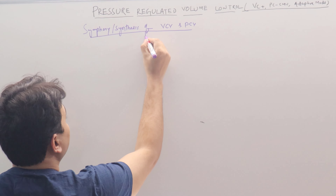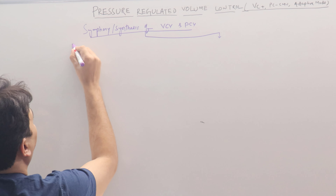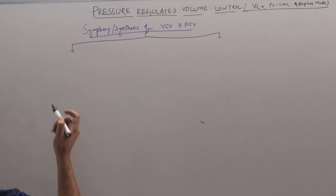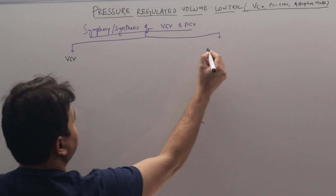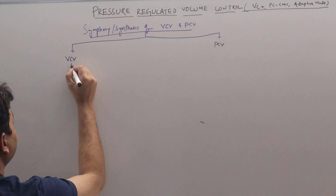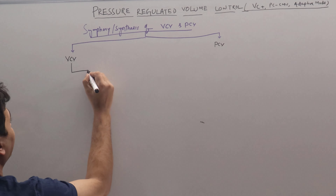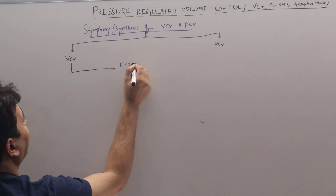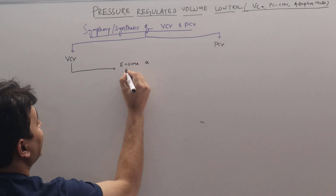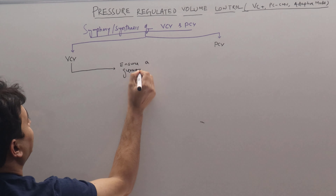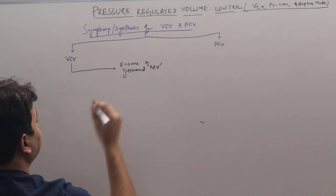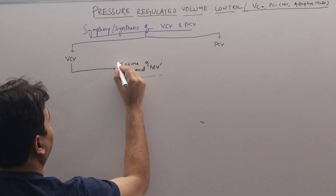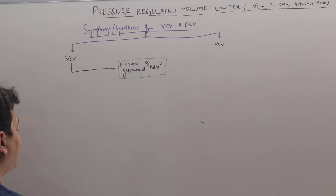If we divide into two parts — one is VCV and one is PCV — what is the advantage of VCV? The advantage of VCV is we ensure a guaranteed minute ventilation. This is one of the major advantages of VCV: we guarantee a minute ventilation.